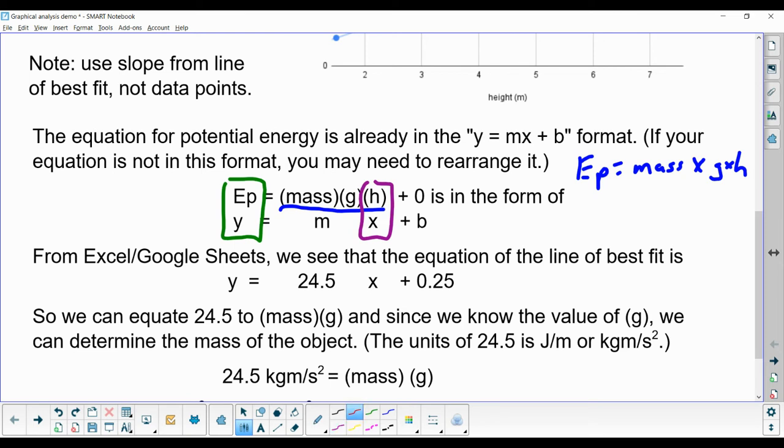So then what that really means is that the value of the slope of the line, m, is equivalent to mass multiplied by the acceleration due to gravity, g.